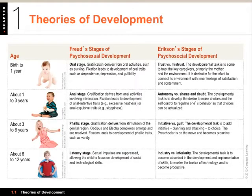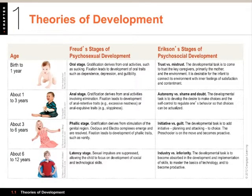Freud says the first stage of psychosexual development, from birth to one year, is the oral stage. Gratification comes from oral activities such as sucking, eating, and swallowing, and a fixation at this period could lead to oral traits like dependence, depression, and gullibility — because this is a stage where you're supposed to learn to trust people to administer your basic needs. Erikson put a spin on this, calling it trust versus mistrust. The developmental task is to come to trust your key caregivers and the environment, laying the foundation for further development.